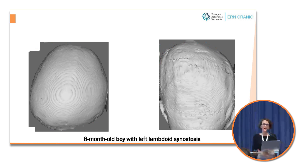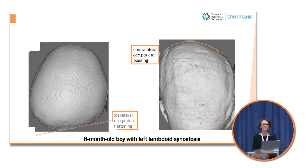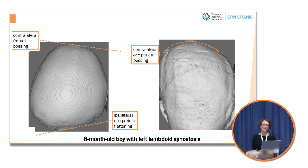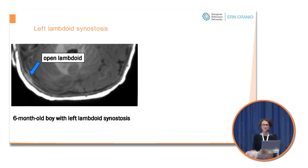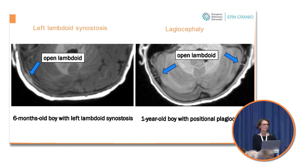I find it extremely helpful to differentiate posterior positional plagiocephaly from unilateral lambdoid synostosis. You get more of a trapezoidal head shape in lambdoid synostosis and contralateral bossing, while you get a parallelogram and no bossing in positional plagiocephaly. Remember to look at the sutures even on conventional MRI — in lambdoid synostosis we often see contralateral abnormal widening of the sutures, whereas in positional plagiocephaly the sutures are normal and open.